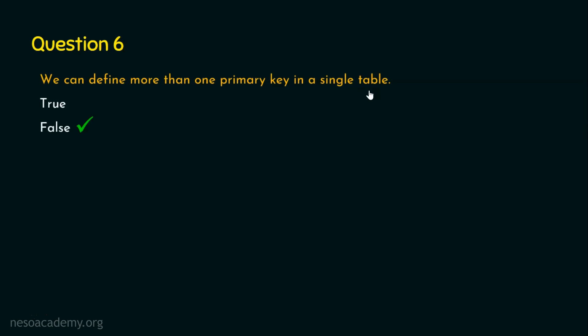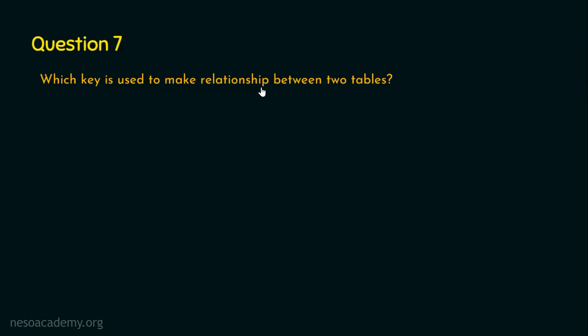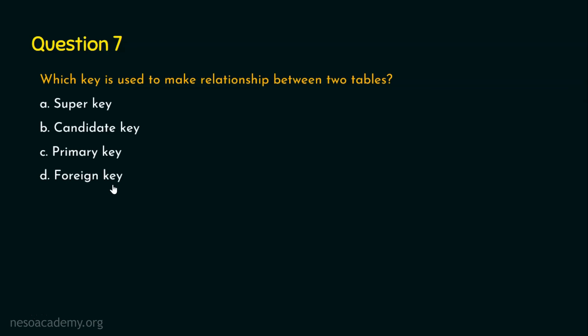The last question: which key is used to make a relationship between two tables? Options: Option A, super key; Option B, candidate key; Option C, primary key; Option D, foreign key. The answer is Option D, foreign key, because when talking about a relationship between two tables, the foreign key is used. I hope you liked this video — thank you for watching.